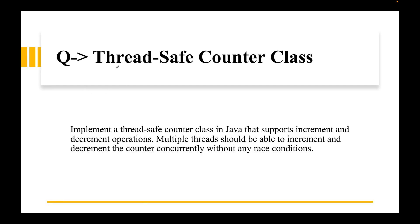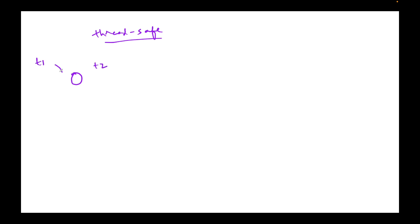Today's question is: implement a thread-safe counter class. You have to implement a thread-safe counter class that supports the increment and decrement operations. Multiple threads should be able to increment and decrement the counter concurrently without any race condition. Thread safety means that if you have a shared resource and two threads T1 and T2 manipulating the same resource, you should not end up with any incorrect result.